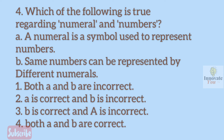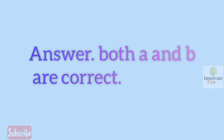Question 4. Which of the following statements is true regarding numeral and numbers? A. A numeral is a symbol used to represent numbers. B. Same numbers can be represented by different numerals. 1. Both A and B are incorrect. 2. A is correct and B is incorrect. 3. B is correct and A is incorrect. 4. Both A and B are correct. Answer: Both A and B are correct.